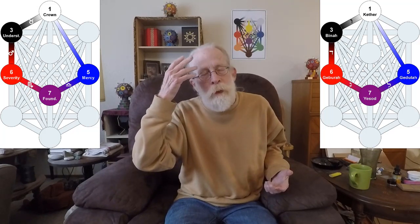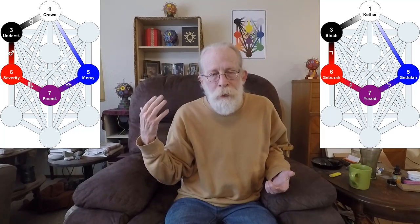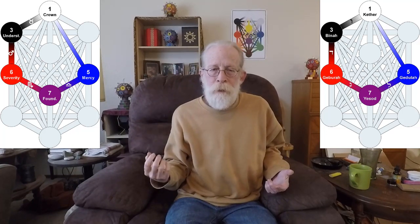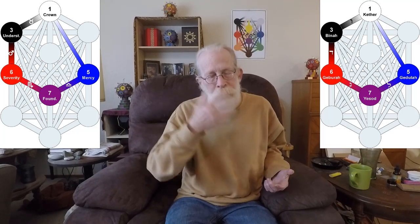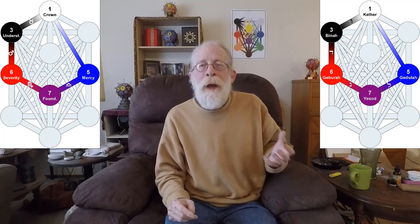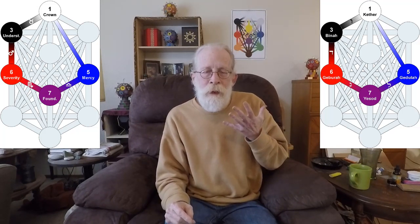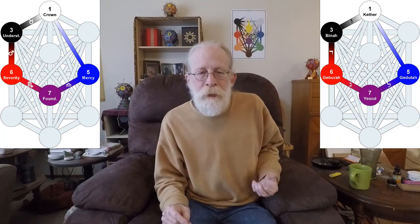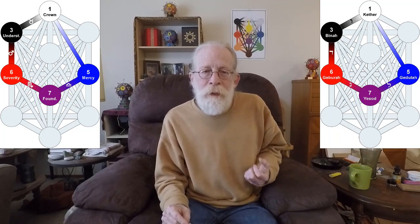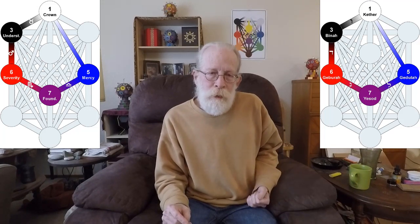And then down along Vav and Deleth back to Gebura, and then back around. So here, the dramatic part of this gate is that quick descent, rise and descent from Kether, and down to Gedjula.